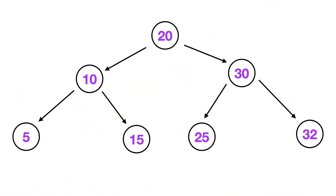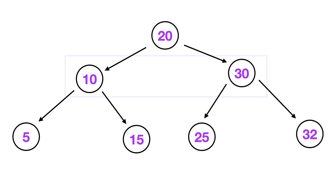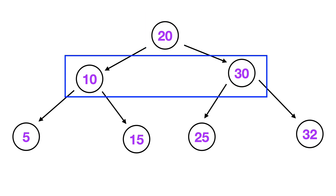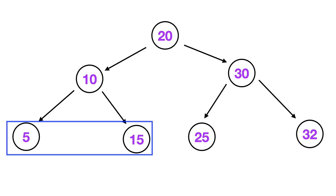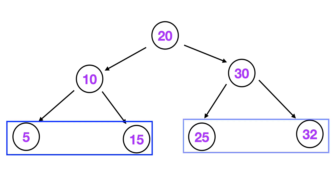We're going to build out this tree right here, which has a root node of 20. Below that we have two child nodes: a node with a value of 10 on the left, and a node with a value of 30 on the right. And then each of those child nodes have two more child nodes each.